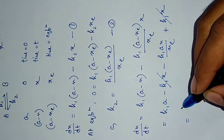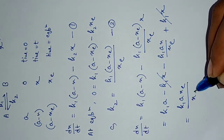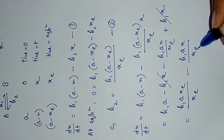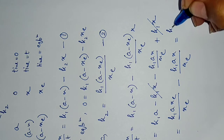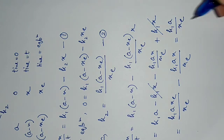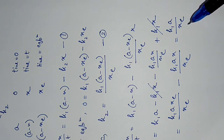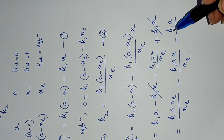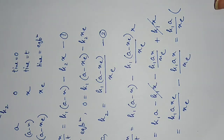We can write this as k1·a·x_e/x_e, since x_e ≠ 0. Taking k1·a/x_e as a common constant factor — x_e is the concentration of B at equilibrium (constant), 'a' is the initial concentration (constant), and k1 is constant at a given temperature — we have (x_e - x) as a common factor.